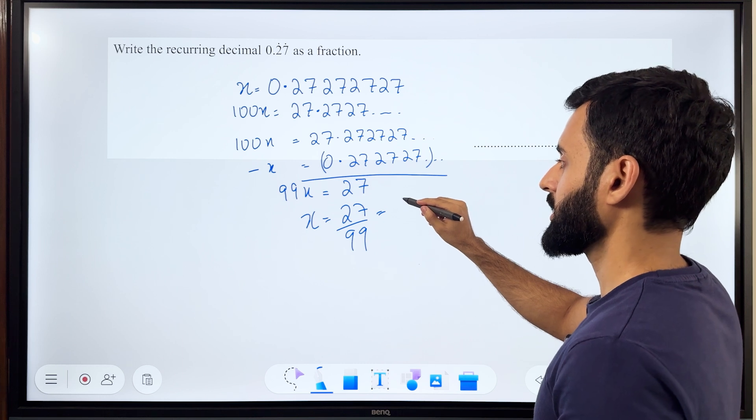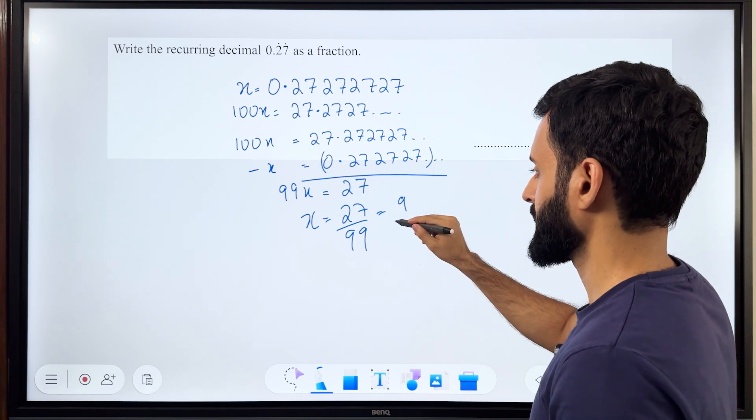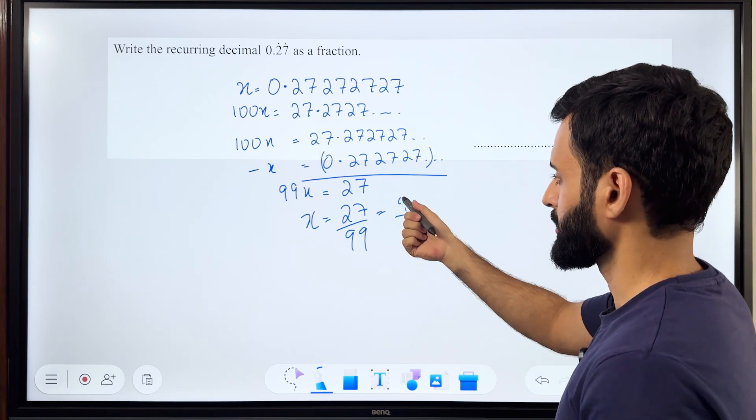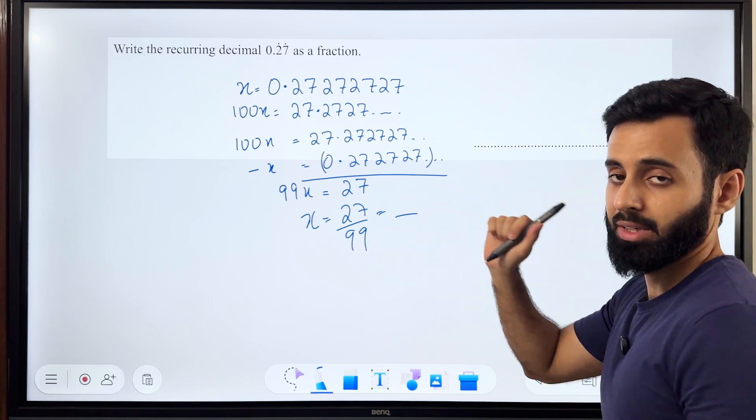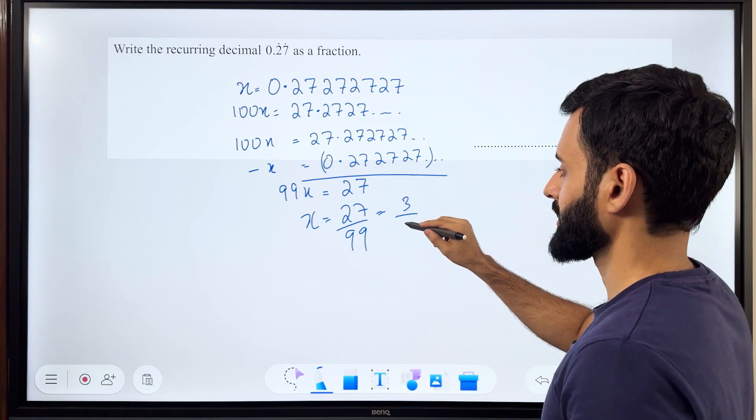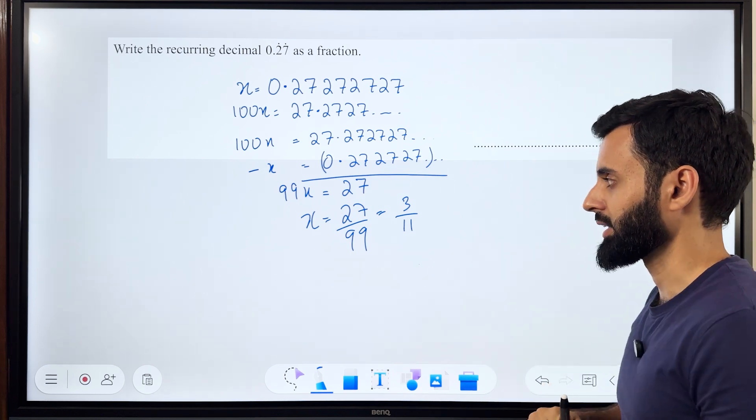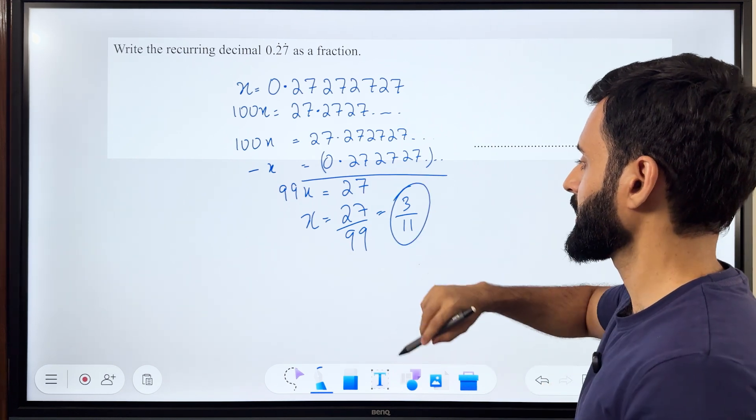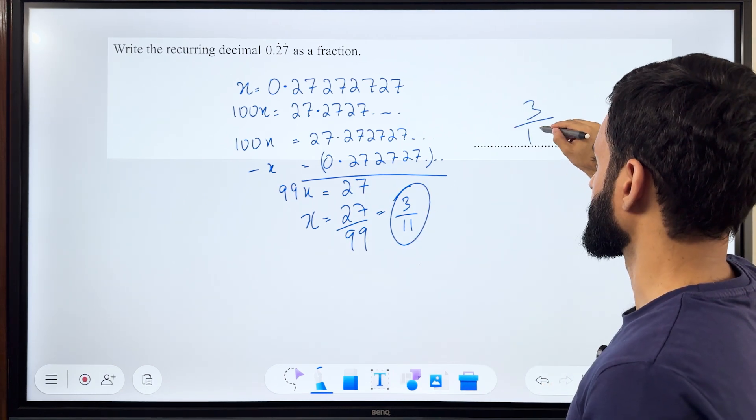We can simplify 27 and 99 using the table of 3. Actually, you know what? We can do better than that. We can simplify using the table of 9. So 9 times 3 is 27 and 9 times 11 is 99. And there you go. 3 over 11 is the decimal value of 0.272727.